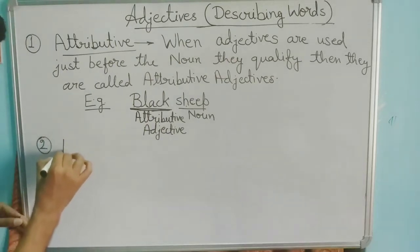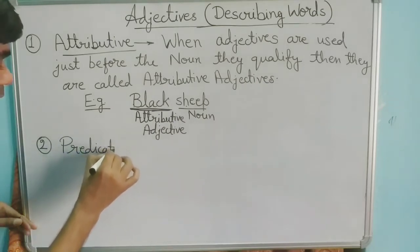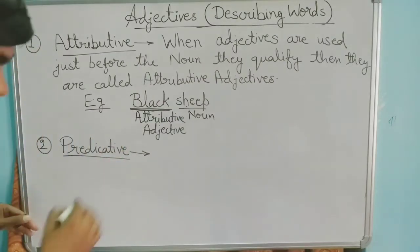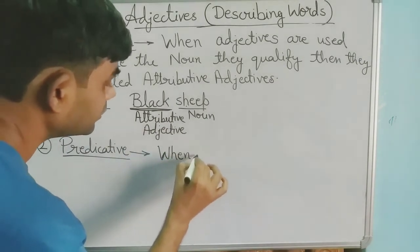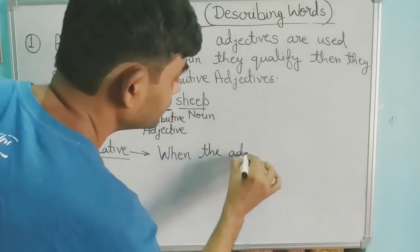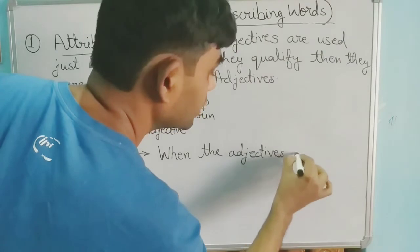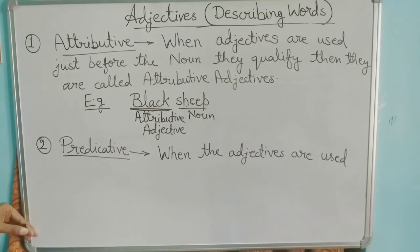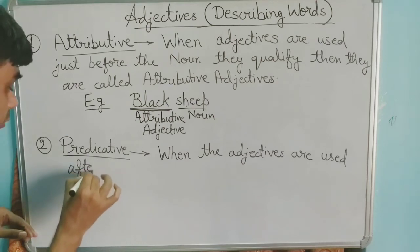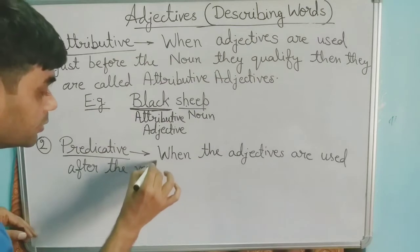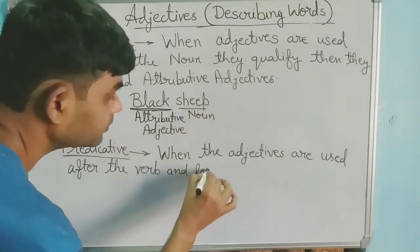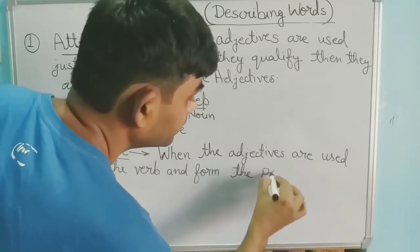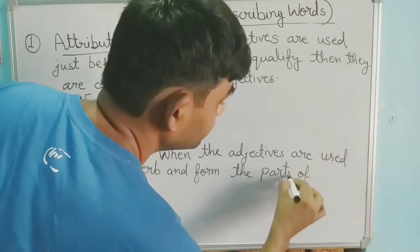The second type is Predicative. What is Predicative? When the adjectives are used after the verb and form part of the predicate, they are called Predicative adjectives.